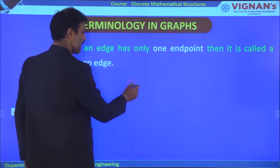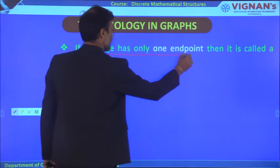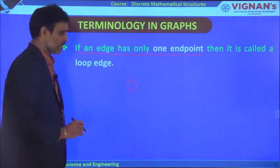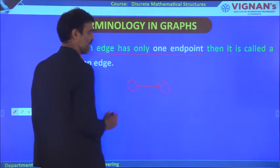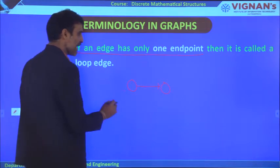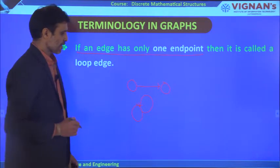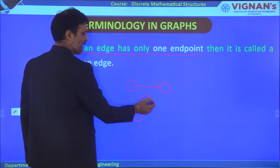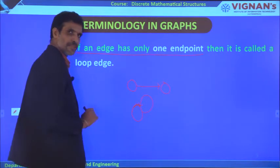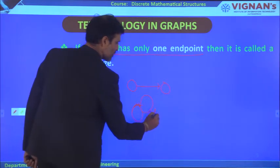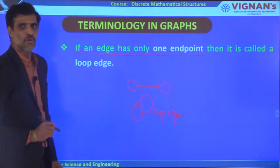If you take a vertex and the edge connects back to the same vertex — only one endpoint — whether it is a directed or undirected graph, if the edge has only one endpoint like this, then we call it a loop edge. This is called a loop edge.